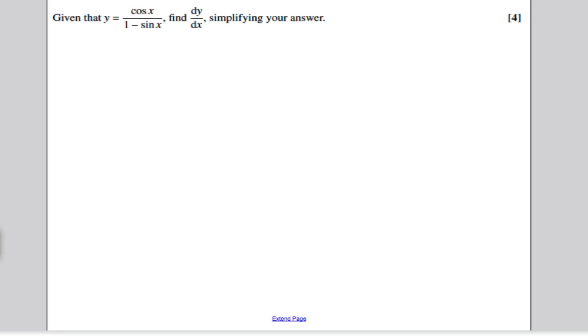When you see something like this, you should be immediately thinking, well, I've got a function on the top of a quotient and I've got a function on the bottom of a quotient, a quotient being a fraction, and I should use what's called the quotient rule.